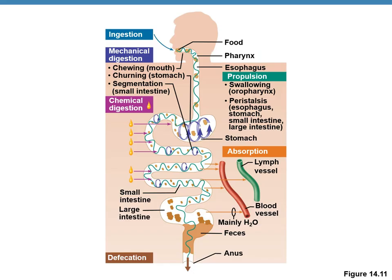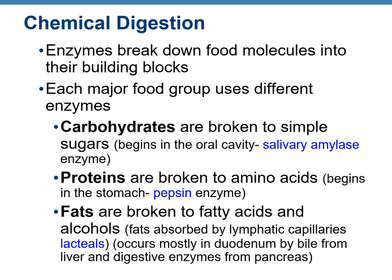This is a summary of all digestive organs and their functions. Regarding chemical digestion: carbohydrates are broken down into simple sugars, beginning in the oral cavity with salivary amylase. Proteins are broken down into amino acids, with digestion beginning in the stomach via pepsin. Fats are broken down into fatty acids and alcohols, absorbed by lymphatic capillaries called lacteals. The digestion and absorption of fat occurs mostly in the duodenum with bile from the liver and digestive enzymes from the pancreas.